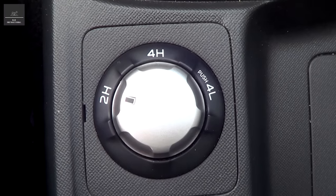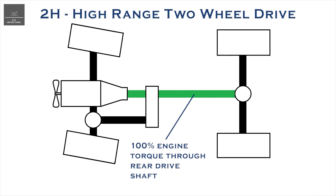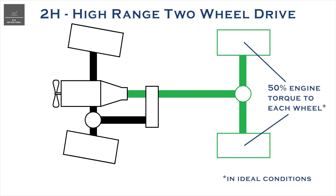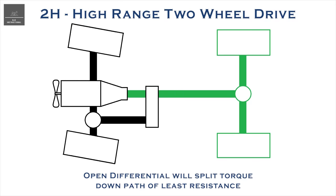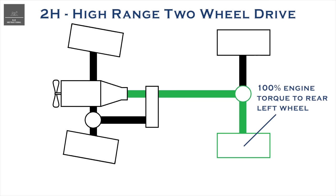So say our vehicle is in 2 high, or high range 2WD — 100% of the engine torque via the transmission is sent to the rear drive shaft, which in turn provides torque to the rear differential. In an ideal case, the differential will split the torque 50-50% equally to each wheel via the axles. In reality, however, the differential will split the torque down the path of least resistance. For example, if one wheel is in the air and has no traction, all the torque will be sent to this wheel as it has the least resistance, essentially meaning you only have one wheel drive. This is a big shortcoming of an open differential.